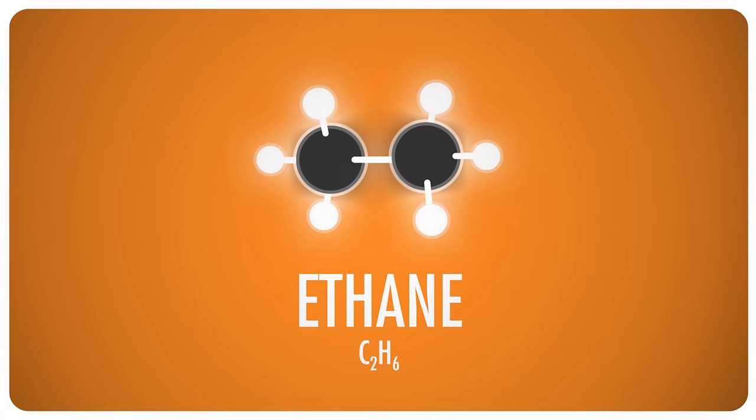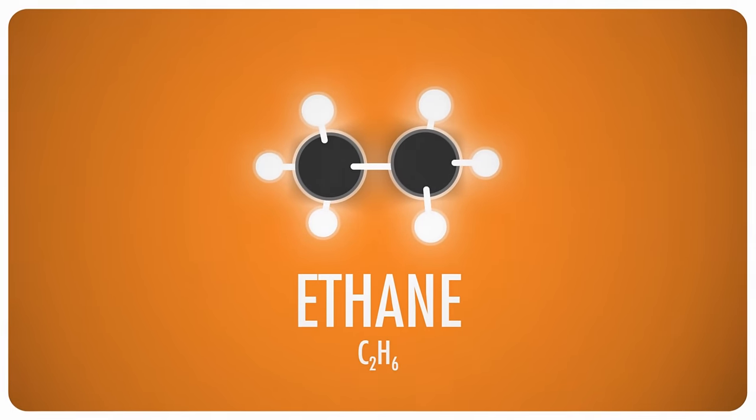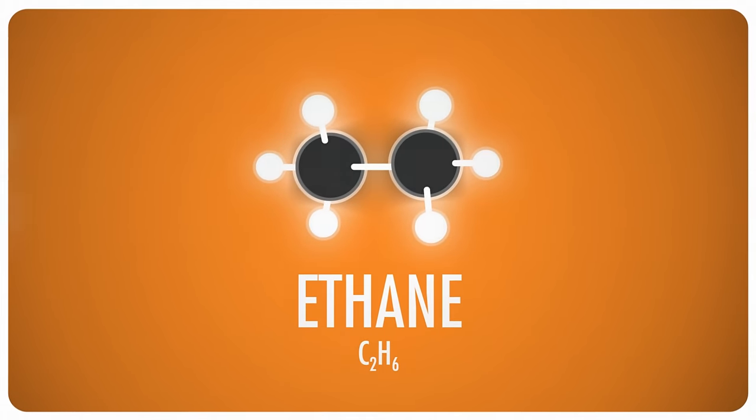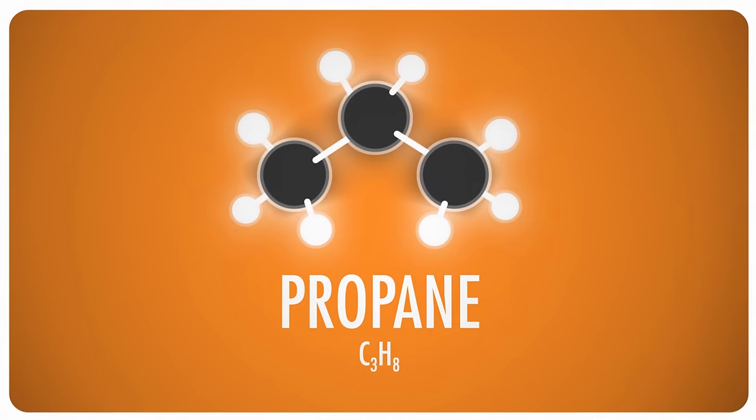If we add another carbon and enough hydrogens to fill all those spaces, we get our next alkane: propane, C3H8. Also a gas at room temperature and normal atmospheric pressure, propane is a common fuel for cooking, heating, and vehicles, as well as a propellant for everything from aerosol cans to paintball guns. And we could do this all day, adding carbons to the chain and giving each compound a name, but that would be pretty boring.